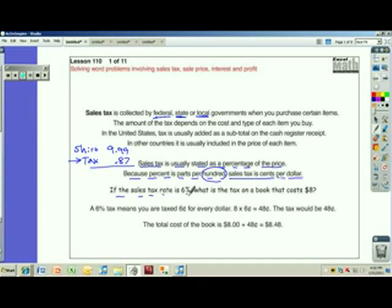So if the sales tax rate is 6%, what is the tax on a book that costs $8? Well, for every dollar, you're going to pay 6 cents. 6% means 6 out of 100. A 6% tax means you are taxed 6 cents for every dollar. So if you pay $8 and there's 6 cents for each one, you're going to pay 48 cents in tax. The total cost of the book then is $8.48.